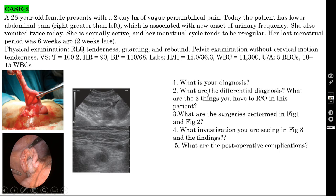These are the different causes for acute right lower quadrant pain. What are the surgeries performed in Figure 1 and Figure 2? Figure 1 shows open appendicectomy — you are seeing the appendix, the meso-appendix, and the branches of the appendicular artery. Figure 2 shows laparoscopic appendicectomy.